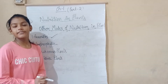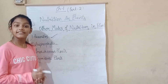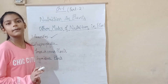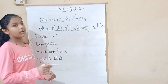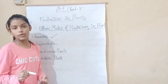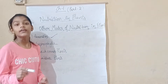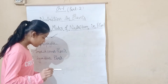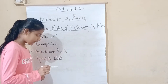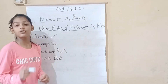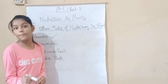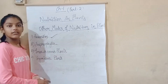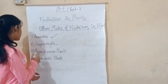Saprophytes do not contain chlorophyll, which is why they do not perform photosynthesis. They obtain their food by secreting digestive juices onto dead and decaying organic matter — this is called saprophytic nutrition.